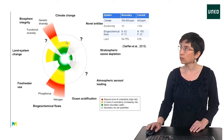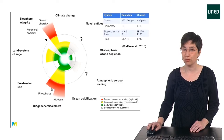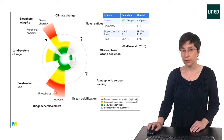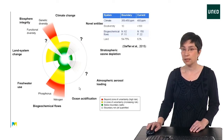The four transgressed boundaries are: climate change, biosphere integrity, land system change, and biogeochemical flows — nitrogen and phosphorus. Another one is close to being crossed: the acidification of oceans.